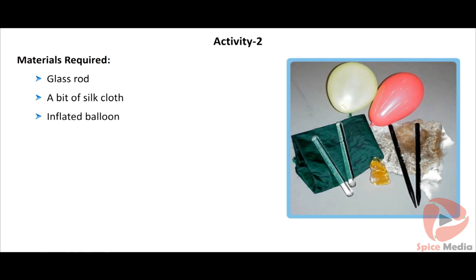Activity two: materials required — a glass rod, a bit of silk cloth, and an inflated balloon. Rub a glass rod with a silk cloth, then bring the rod near an inflated balloon. The inflated balloon will get attracted towards the glass rod. Any uncharged object will get attracted to a charged object. From these activities we can conclude that on rubbing two objects together, they become electrically charged.